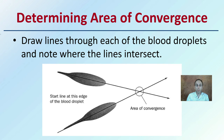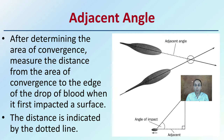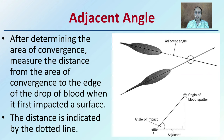To determine the area of convergence, draw lines through each of the blood droplets and note where the lines intersect. We extend this line out and this line out, and here is the area of convergence. With more drops, this might open up the area of convergence a little bit, but they'll give you a good idea to pinpoint that area of convergence.